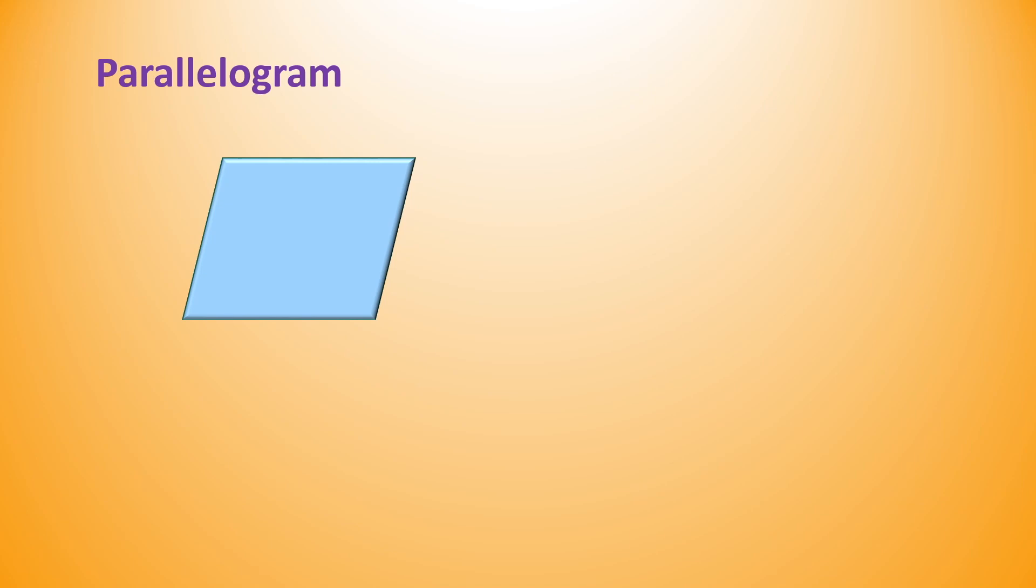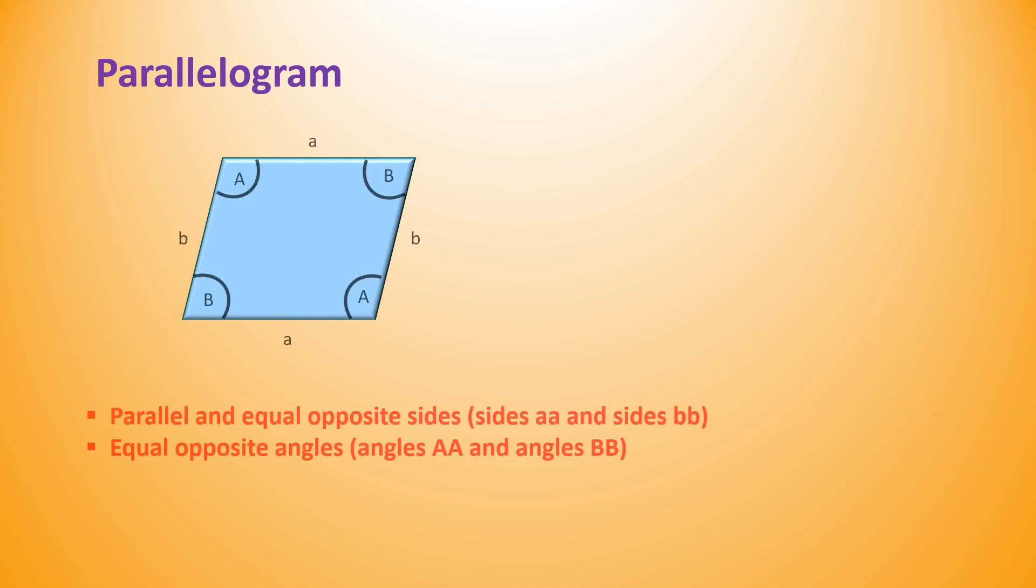There are some 2D shapes which are less common. We don't see them often in our surroundings. Parallelogram is one of them. Parallelogram has two pairs of parallel and equal opposite sides. Similarly, there are two pairs of equal opposite angles. You can observe this parallelogram shape in this eraser.